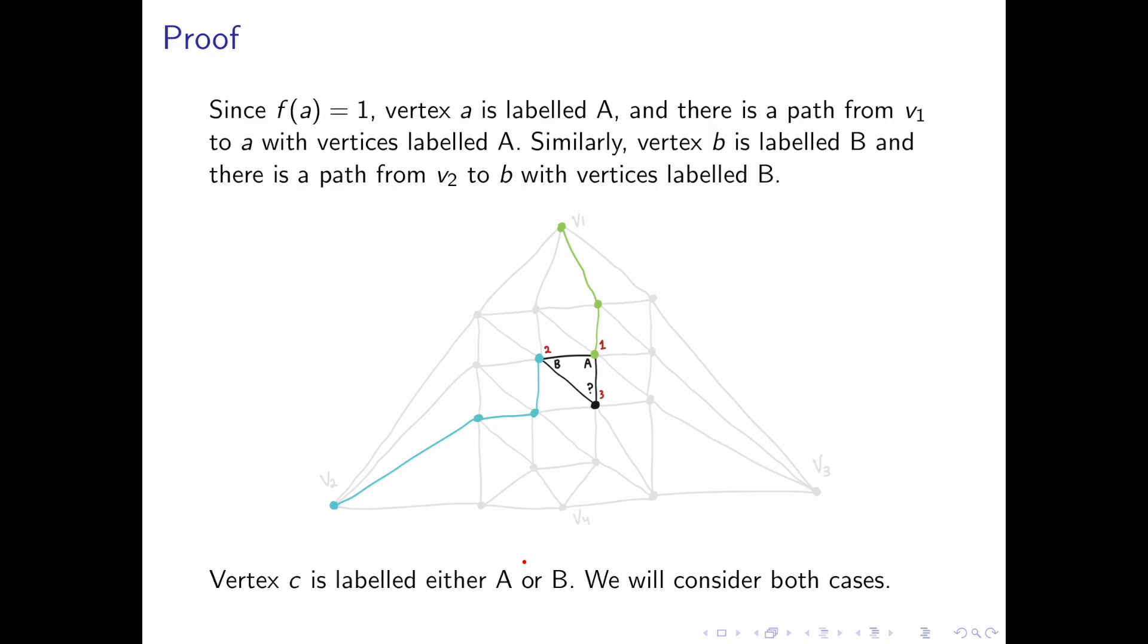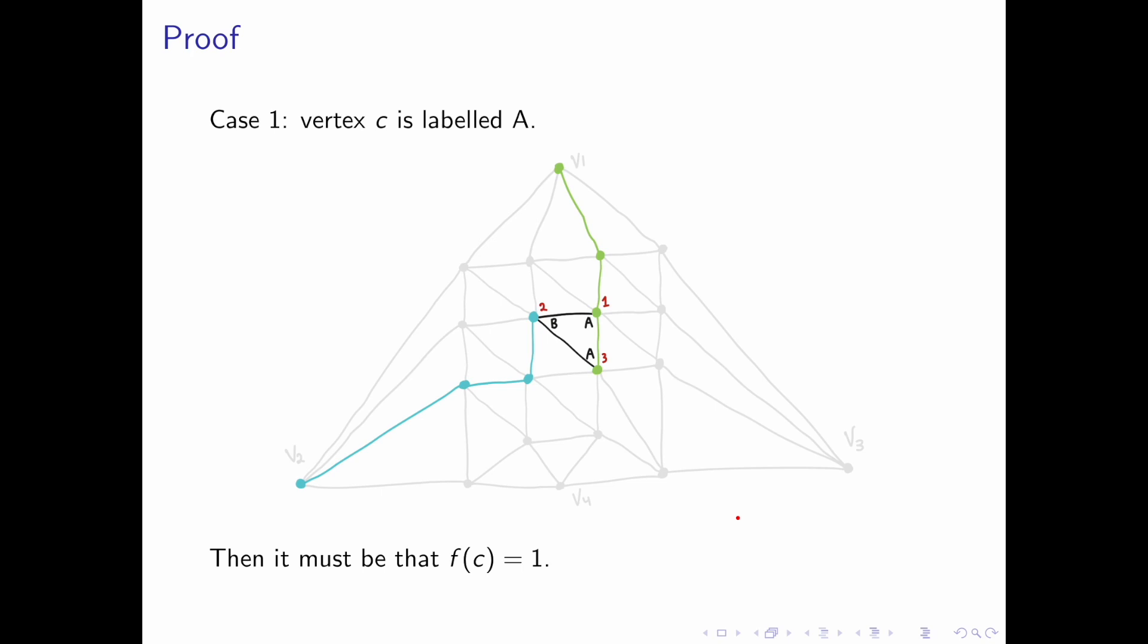Vertex C is labeled either A or B. We will consider both cases. If vertex C is labeled A, then we can extend the green path to go from v1 to vertex A and then to vertex C. So if vertex C is labeled A, this means that f of C equals 1.